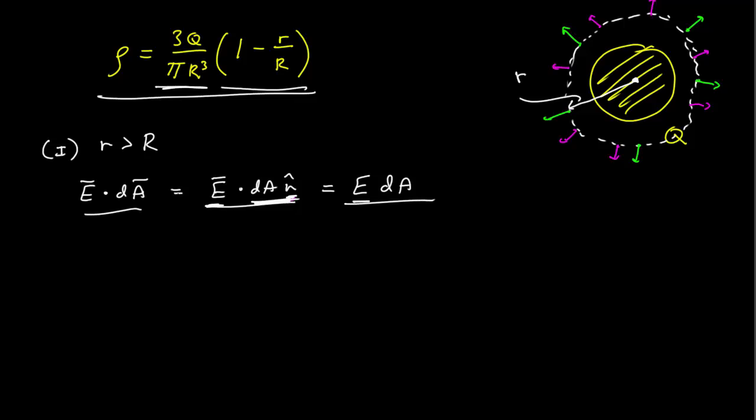So this dot product simplifies greatly and immediately, and now we can integrate this over the entire Gaussian surface, E dA. Since this is a constant, we just pull that out, and we get a surface integral over the entire surface, which is just the area, E times the area, and the area of a sphere, the surface area of a sphere, is 4 pi r squared, so this Gaussian surface is at a distance r from the center.